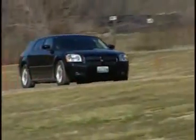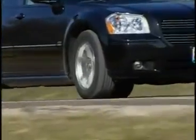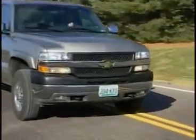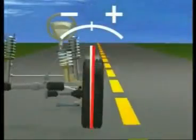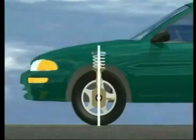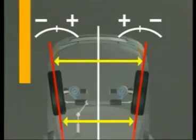The alignment angles needed to be set on any vehicle, passenger or light truck, include camber, caster, and toe.